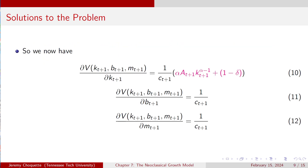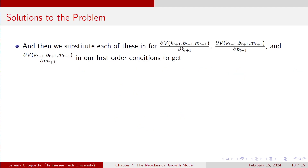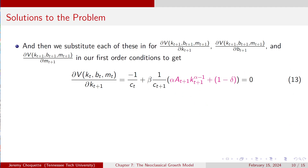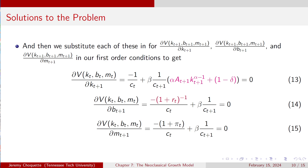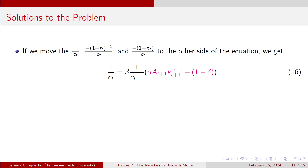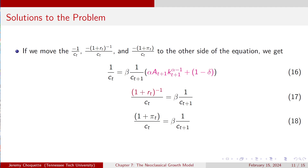We're going to take equations 10, 11, and 12 and substitute them in for those derivatives in our first-order conditions. For capital, I get: negative 1/C_t plus beta times (1/C_{t+1}) times the marginal product of capital less depreciation equals 0. For bonds: negative (1 + r_t) times (negative 1/C_t) plus beta times 1/C_{t+1} equals 0. For money: negative (1 + π_t) over consumption plus beta times 1/C_{t+1} equals 0. Then I move those terms to the other side to get equations 16, 17, and 18.